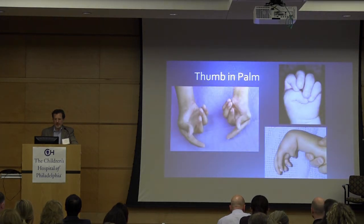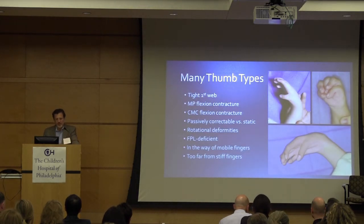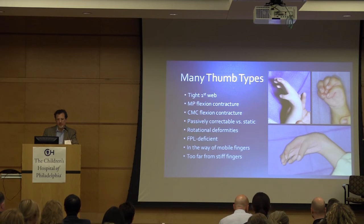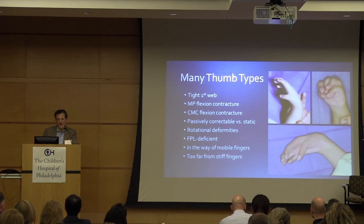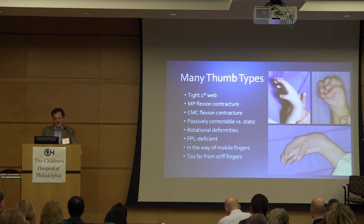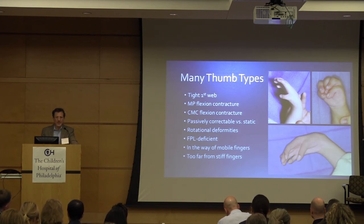Thumb and palm — there's not one diagnosis of thumb-in-palm; there are many thumb types. Type versus web space, MP flexion contractures, CMC flexion contractures — which are not the same thing. Passively correctable versus static deformities, rotational deformities — they tend to be in supination very commonly, almost in the plane of the fingers. There are FPL-deficient and even FPB-deficient thumbs, as well as thumbs that get in the way of mobile fingers and thumbs that are too far from stiff fingers.